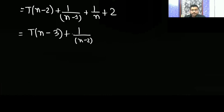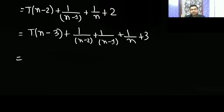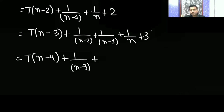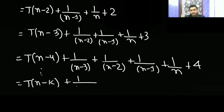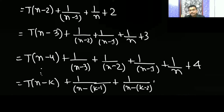Continuing: T(n-2) expands to T(n-3) plus 1/(n-2) plus 1/(n-1) plus 1/n plus 3. Then T(n-3) gives T(n-4) plus 1/(n-3) plus 1/(n-2) plus 1/(n-1) plus 1/n plus 4. Generalizing, T(n-k) gives a sum 1/(n-k+1) through 1/n plus k.